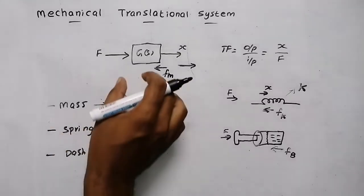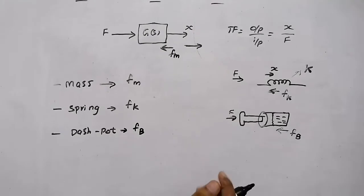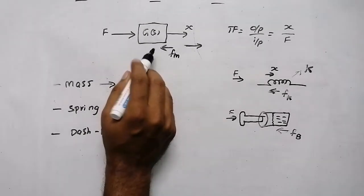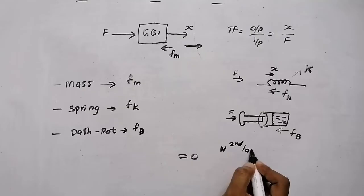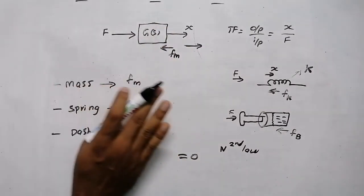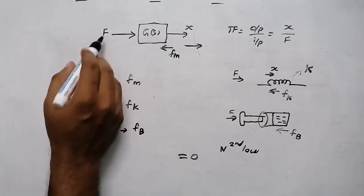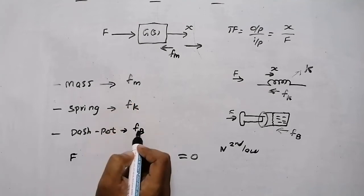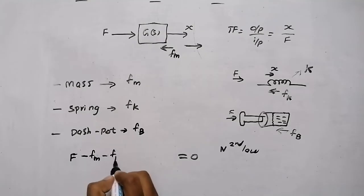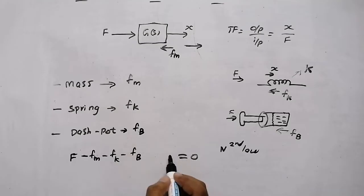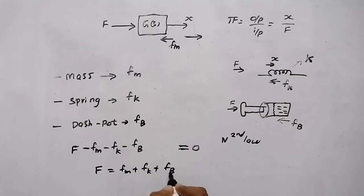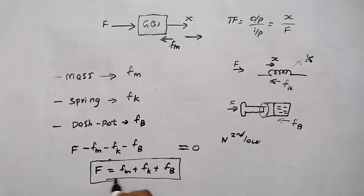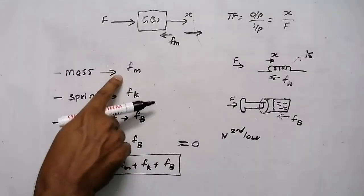These are the three elements required to model a mechanical system. Now according to Newton's second law, for a translational system the sum of all forces acting on a body equals zero. The forces are: the applied force, minus fm (due to mass), minus fk (due to spring), and minus fb (due to dashpot), equals zero. So the force balance equation is: F = fm + fk + fb.